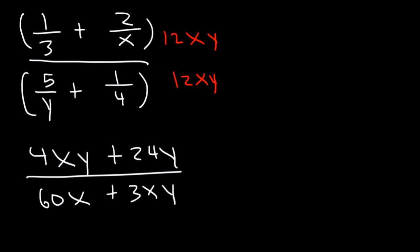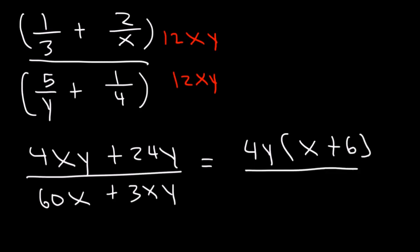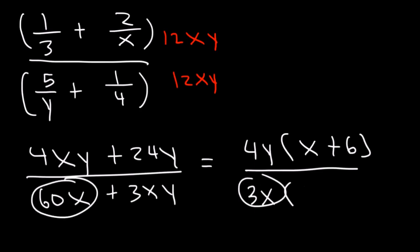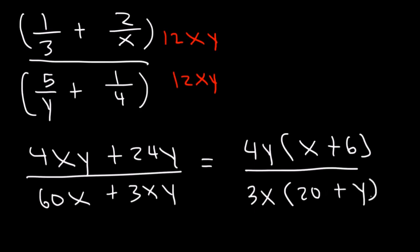Now let's factor. On top, we can take out a 4 and a y, which will leave us with x plus 6. On the bottom, we can take out a 3x. 60x divided by 3x is 20, and 3xy divided by 3x is just y. And so that's the answer.